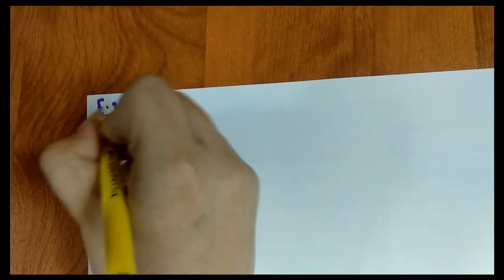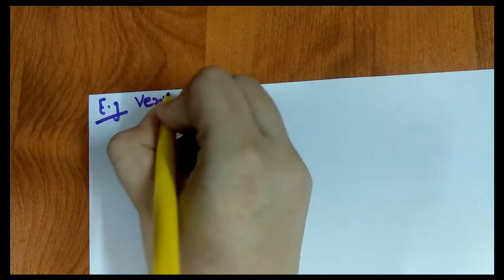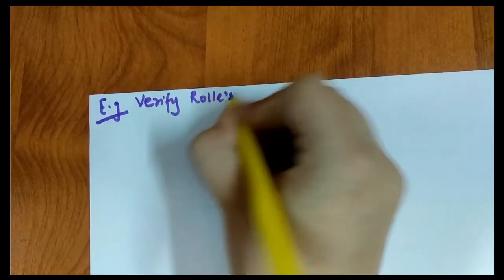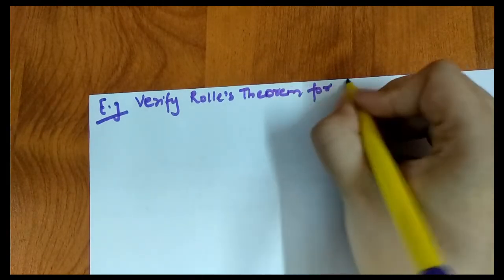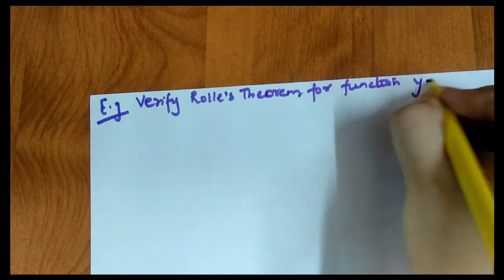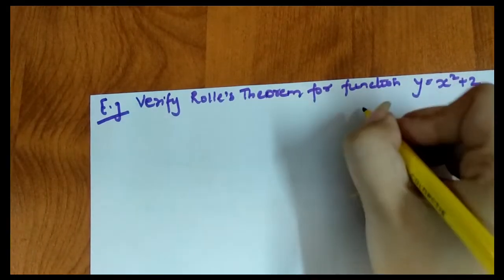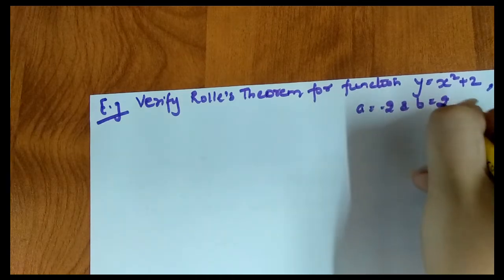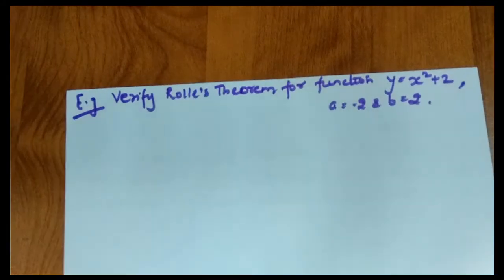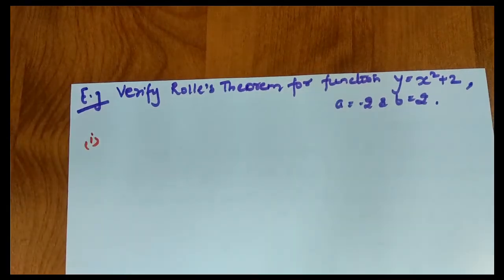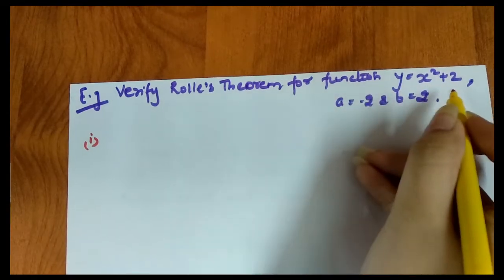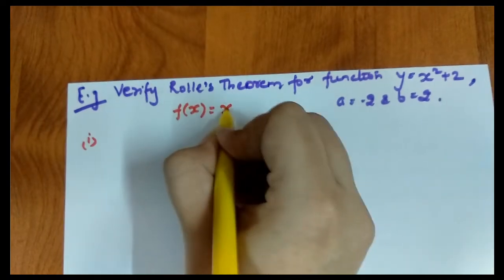Let's take an example to understand this. We have to verify Rolle's Theorem for the function y = x² + 2, where a = -2 and b = 2. We can write this as f(x) = x² + 2.